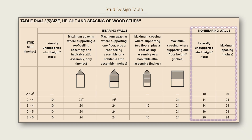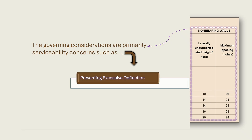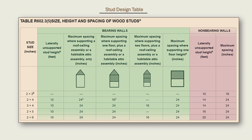The non-bearing wall section reflects an entirely different set of constraints. Because these walls are not required to support roof or floor loads, their allowable heights are generally greater and spacing limits tend to be more permissive. The governing considerations are primarily serviceability concerns such as preventing excessive deflection and ensuring reliable fastening for finishes. Just like the bearing wall portion, the table lists stud size, stud height, and stud spacing combinations, but with relaxed restrictions because the structural demands are much less.